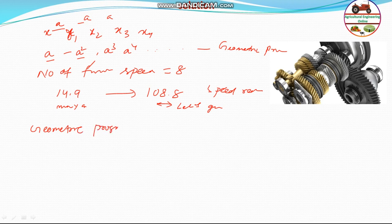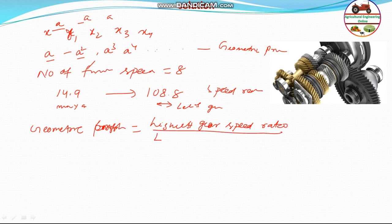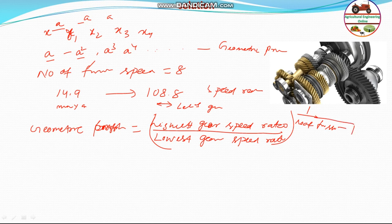So if you see the geometric progression for a gearbox design, the geometric constant will be equal to highest gear speed ratio to the power 1 divided by lowest gear speed ratio to the power 1 divided by number of forward speeds